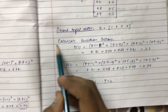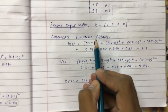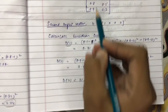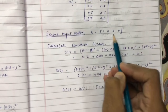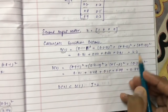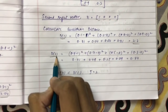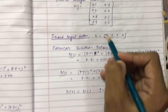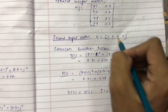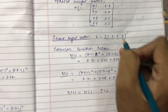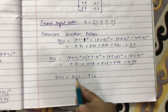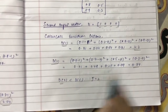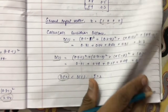For the second input vector x = (1, 0, 0, 0), we calculate the squared Euclidean distances. d1 = (0.1 - 1)² + (0.2 - 0)² + (0.8 - 0)² + (0.9 - 0)² = 2.3. d2 = (0.9 - 1)² + (0.7 - 0)² + (0.5 - 0)² + (0.3 - 0)² = 0.84. Since d2 is lower, the winning cluster is y2.